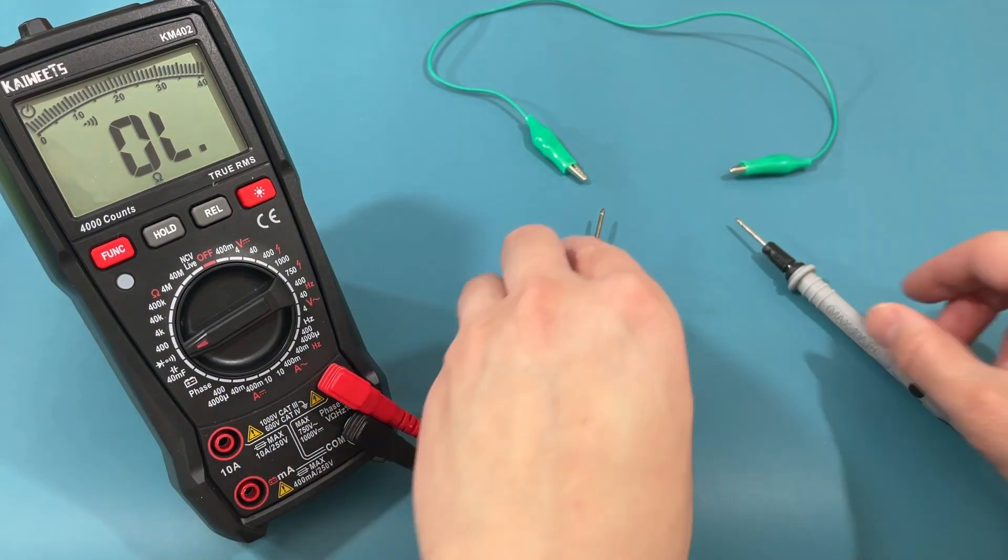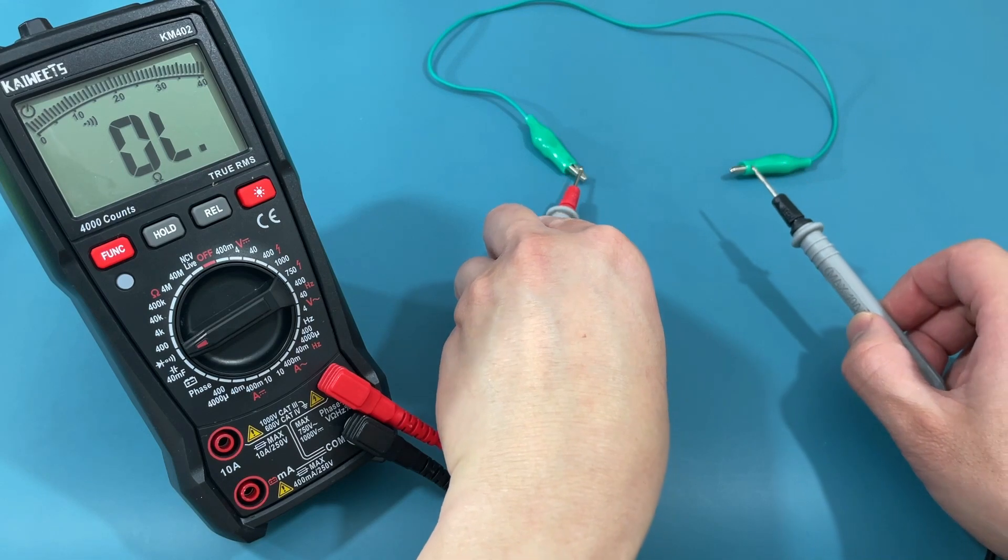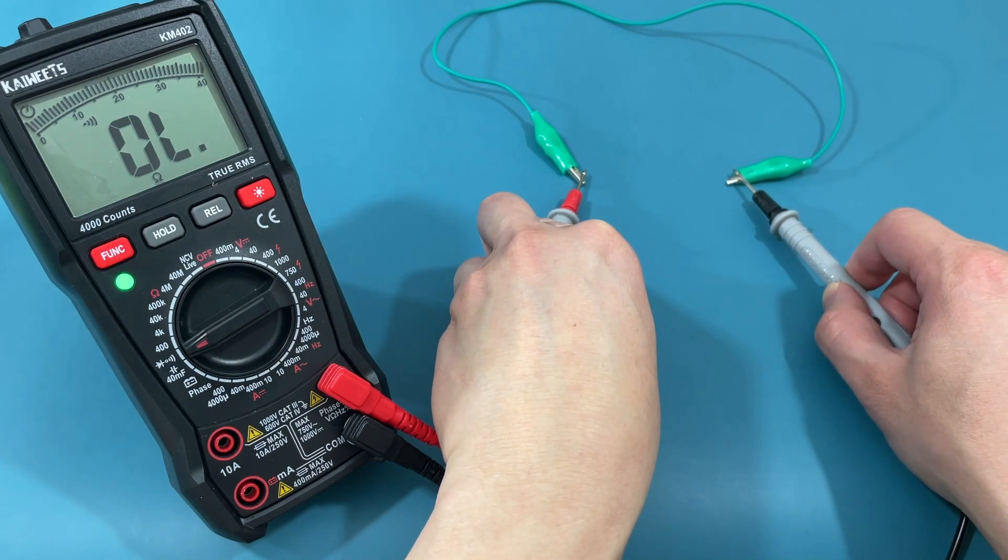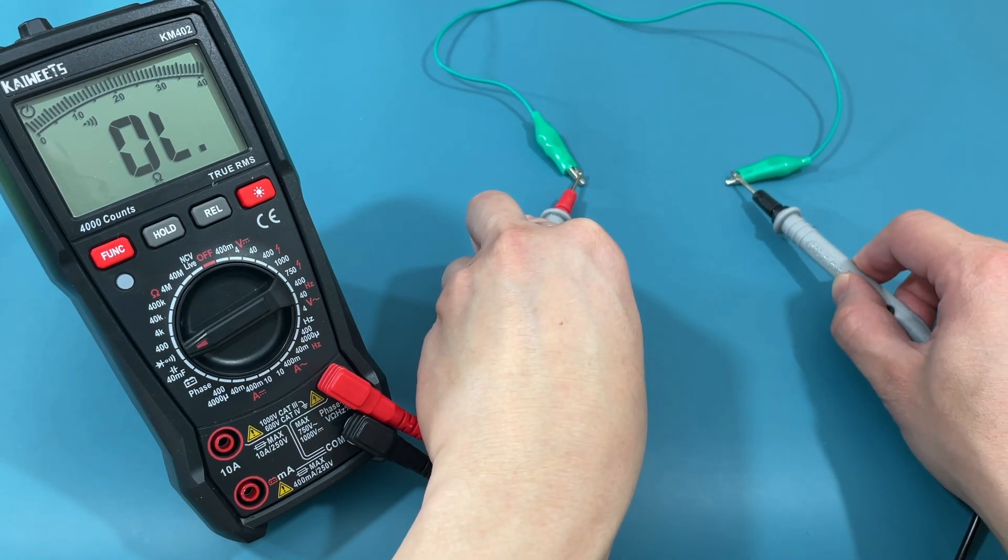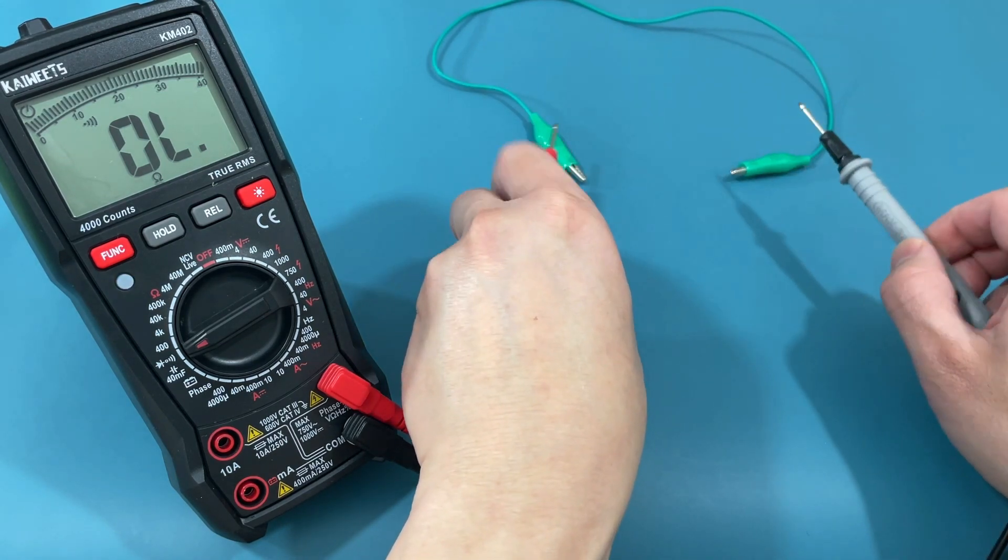The first wire is an alligator clip. Touch each probe to the end of the alligator clip. There is continuity if you hear a beep. This means the wire is good.